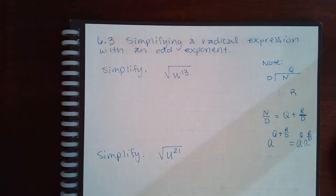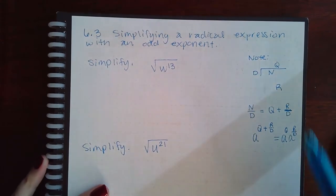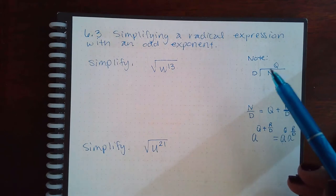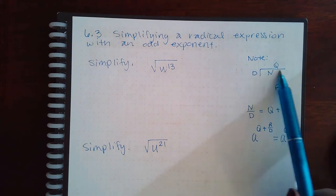Here we have 6.3 simplifying a radical expression with an odd exponent. This is kind of just a note so that you remember. I've already done this with numbers, but when you do that division...